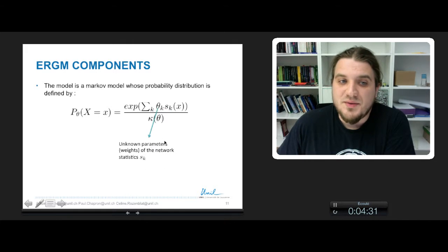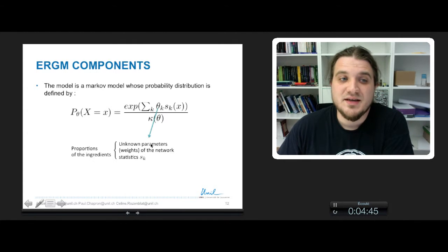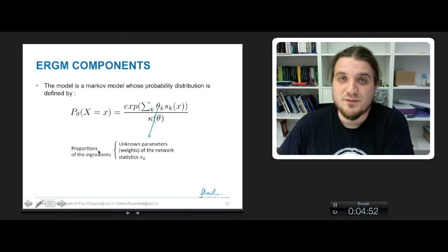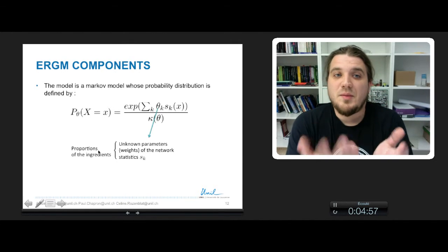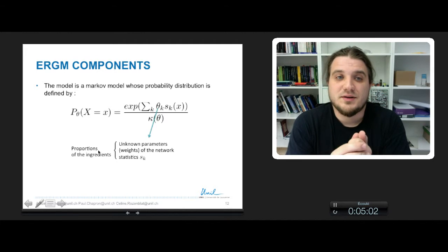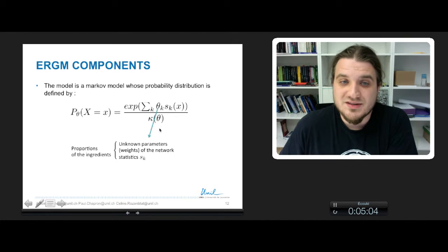Theta k are unknown parameters, the weights in fact of this linear combination of statistics. These are the parameters of the network statistics sk. So to follow our metaphor of cooking recipe, theta k, so the vector of parameter, is the proportion of the ingredient you have to mix in order to have your network. So this is the probability distribution we are looking for, that will describe our network to the extent of some network statistics.